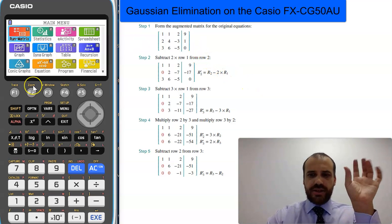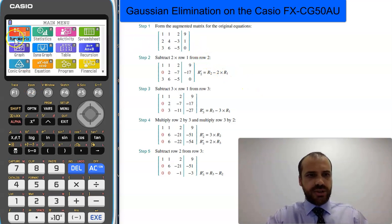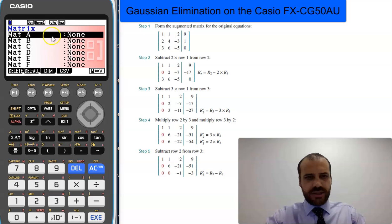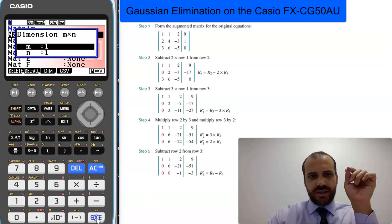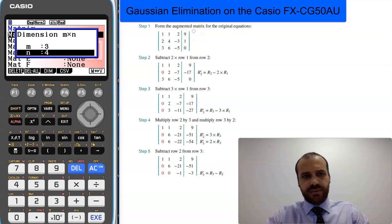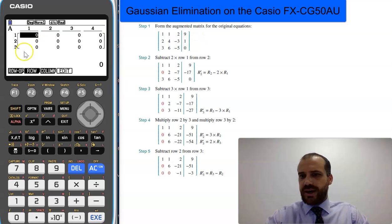Let's do some Gaussian elimination on our Casio calculator. We just go into the run matrix section here and press F3, which gives us this thing here. Now we execute on one of the matrices here and say we want a 3 by 4. It looks like that.